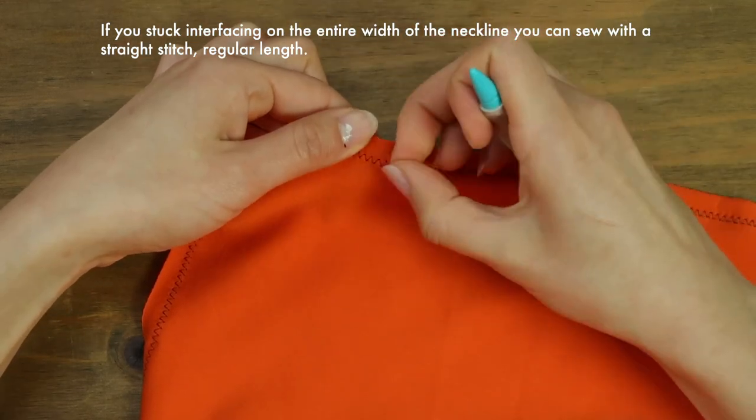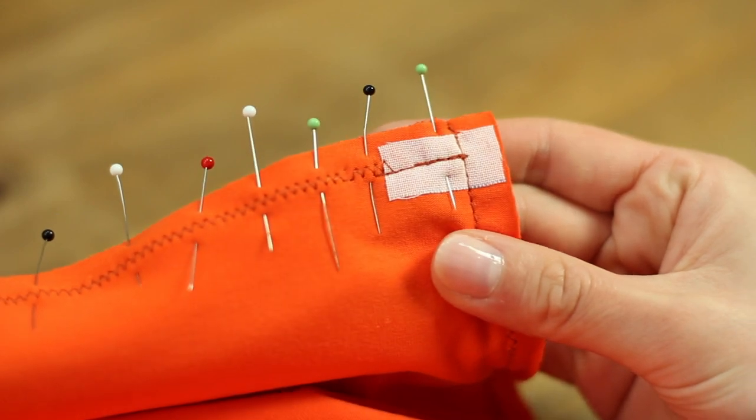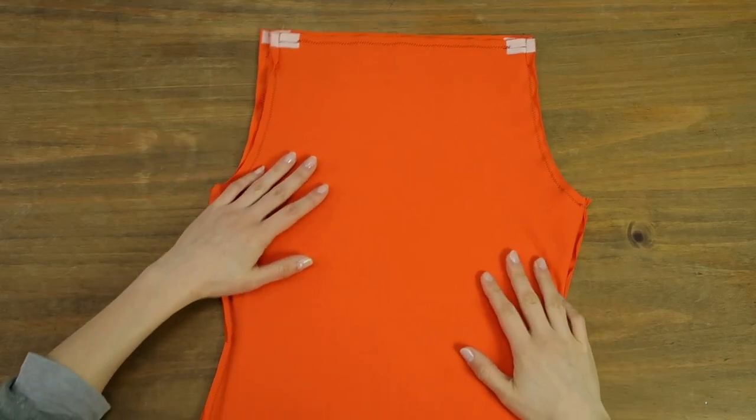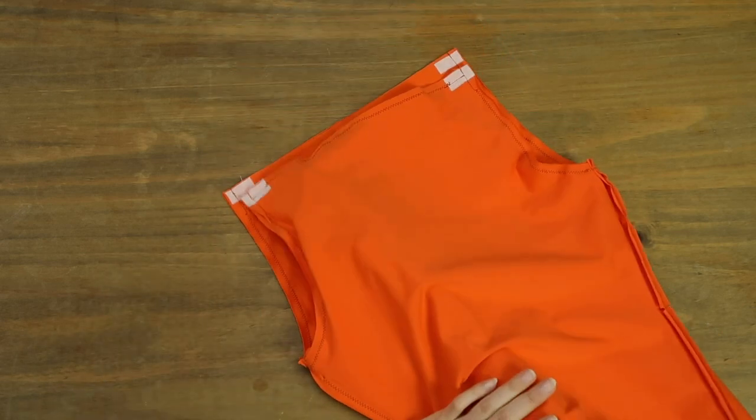So I removed the basting stitches, and now I have to sew the neckline of the back. So at this point, the straps are only sewn to one face of the bodice, it's the front, while we want the straps sewn to both the front and the back of the top.